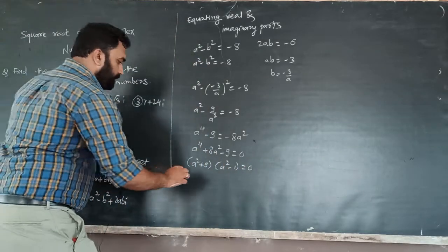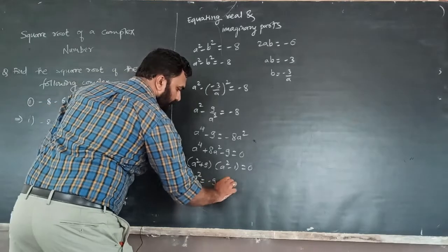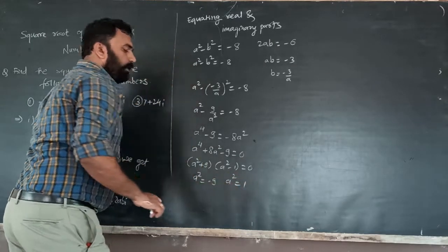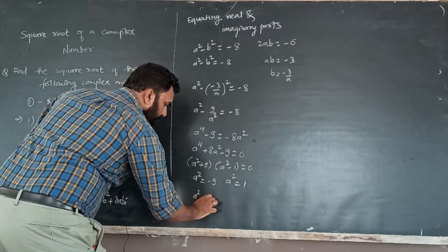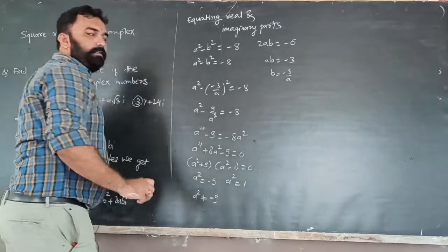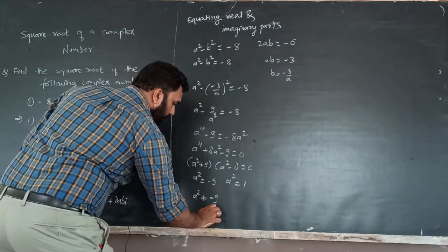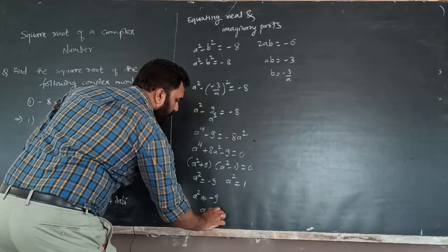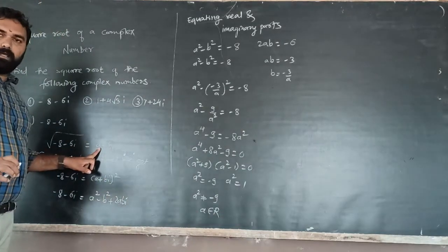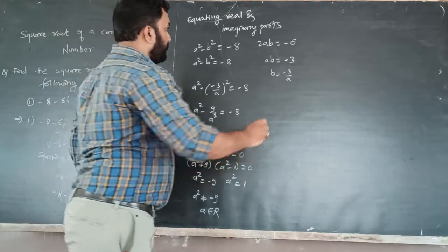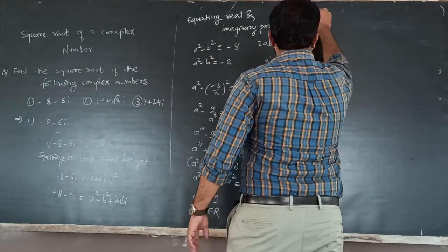Factoring gives a squared equals minus 9 and a squared equals 1. Since a squared equals minus 9 is not valid — because a belongs to the real numbers — we take a squared equals 1, giving a equals plus or minus 1.